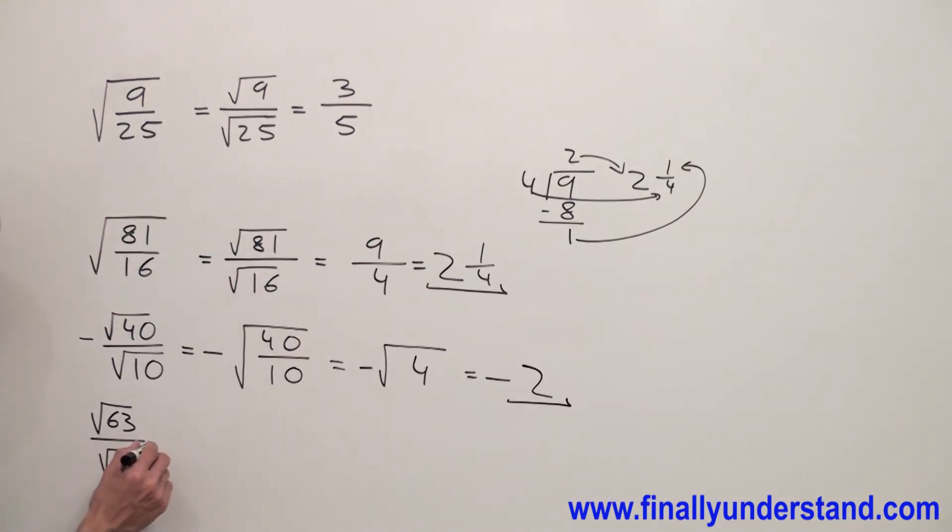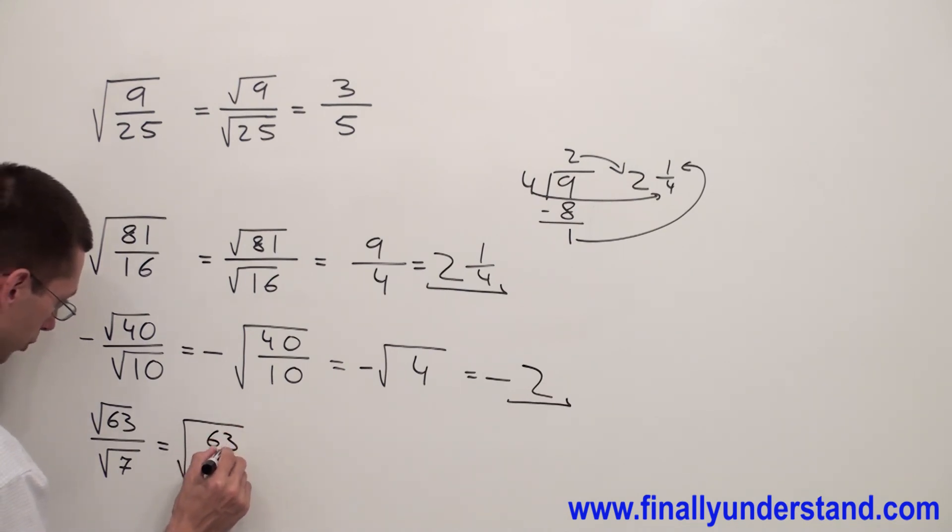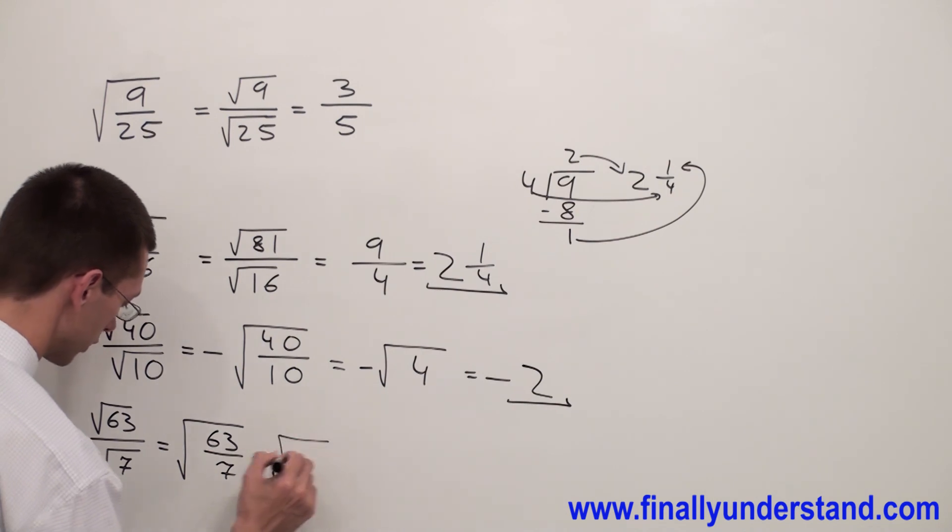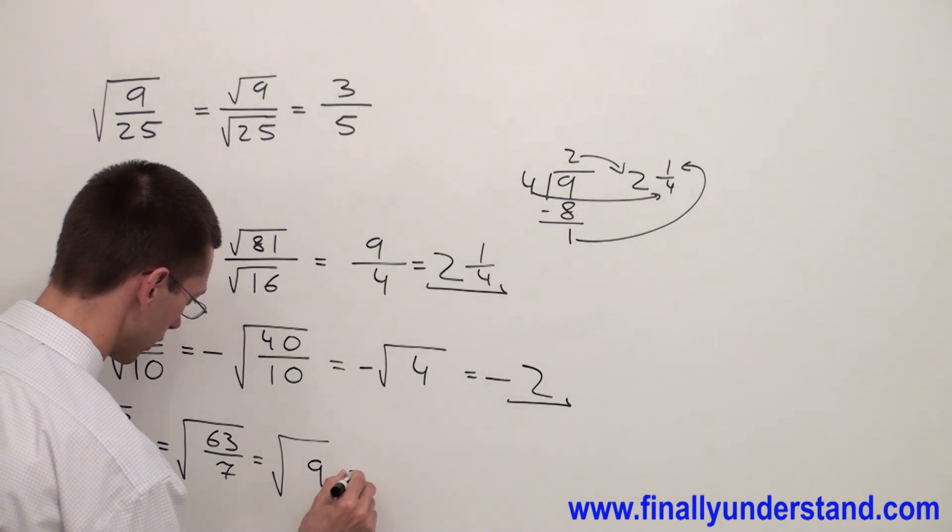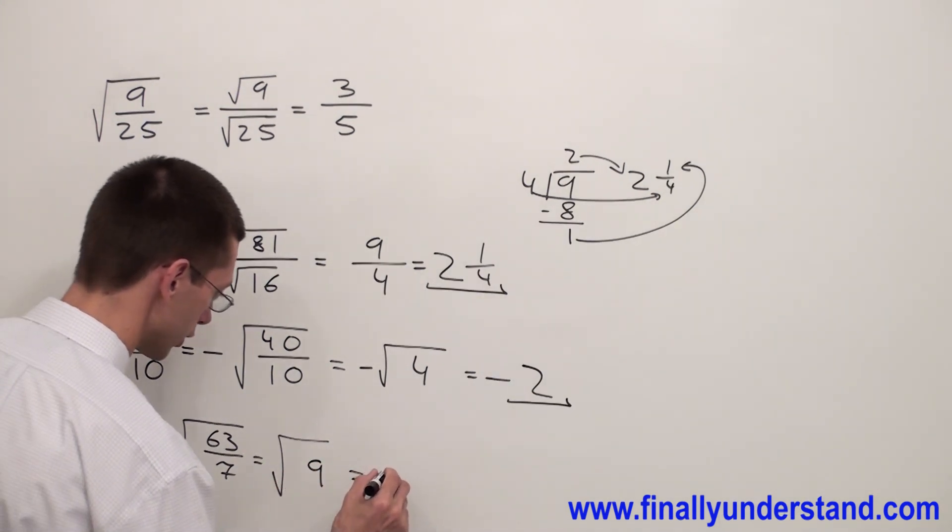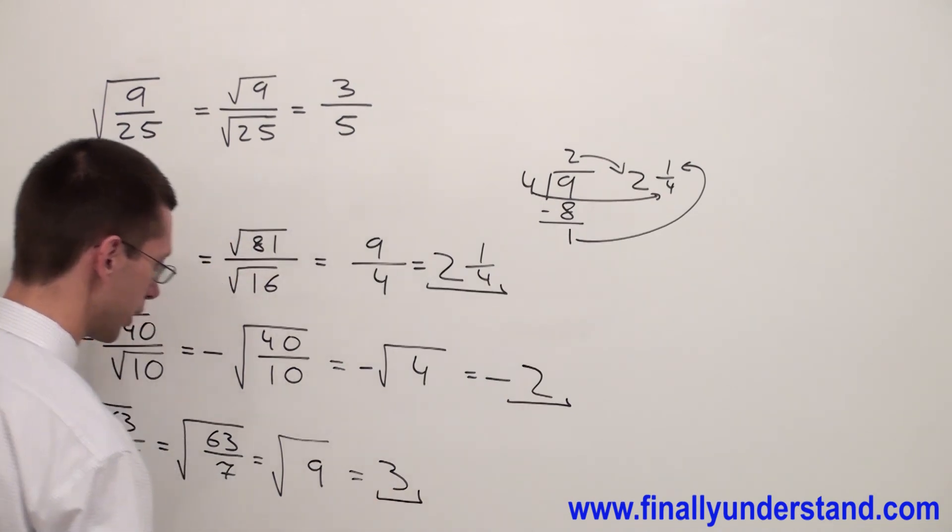Let's take a look at this example. Now I have square root of 63 and square root of 7. Please keep in mind that 63 is divisible by 7. So what I'm going to do, instead of having two radicals, I'm going to just make one, because when I have division I can do that. And divide 63 by 7. Square root of 63 divided by 7 equals 9. Square root of 9 equals 3. This is the solution to my problem.